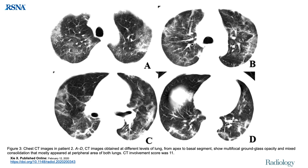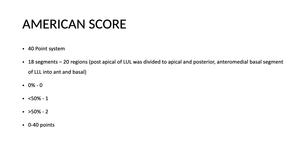This CT scan from apex to base of the lungs shows multilobar involvement with a CT involvement score of 11. There is also an American scoring system — a 40-point system using bronchopulmonary segments. Instead of lobes, it considers 18 segments divided into 20 regions — the posterior apical of the left upper lobe was divided into apical and posterior, and the anteromedial basal segment of the left lower lung into anterior and basal. Zero percent involvement scores 0, less than 50% scores 1, greater than 50% scores 2 — total 20 regions, maximum score of 40.